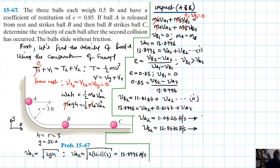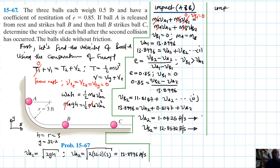Therefore v_b2 equals 1.0425 plus 11.8147, which gives 12.8572 ft/s. We are done with the first part. Let's move on to the second impact between B and C.